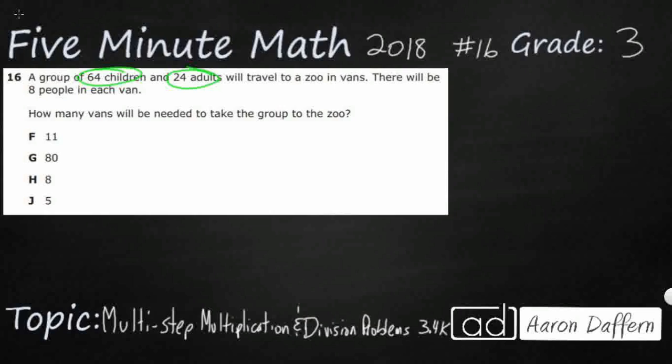So this is going to be kind of a tricky problem. First, we need to figure out how many people are going. The only two numbers we have for the total number of people are going to be the children and the adults.